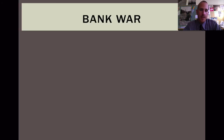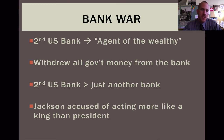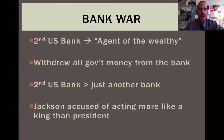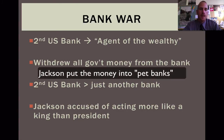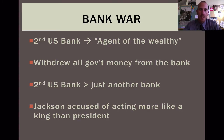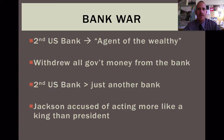Moving on, another conflict is Jackson and the bank war. Remember Jackson being this common man, favoring the everyday person, growing up poor — he believes the second bank of the United States is simply an agent of the wealthy and is only there to serve rich people. In his second term, Jackson withdraws all of the government money from this bank, making it just another bank like any other. After defying John Marshall, going through the nullification crisis, and now the bank war, a lot of people start to accuse Jackson of being more like a king than a president.